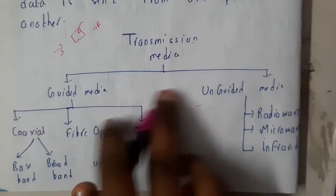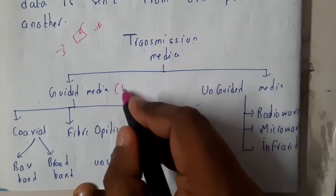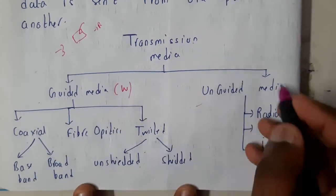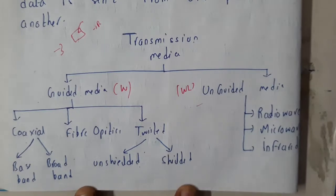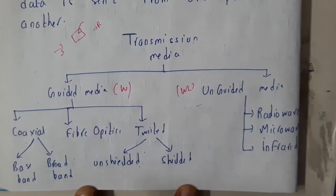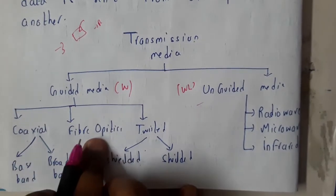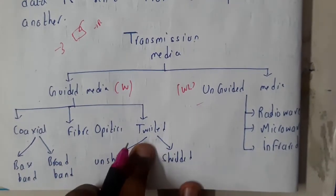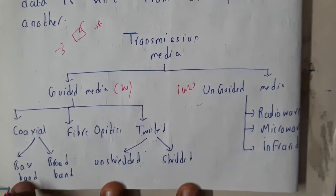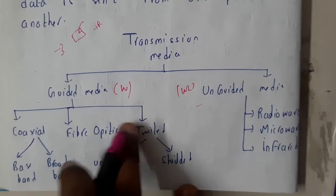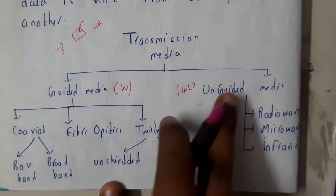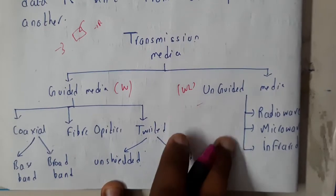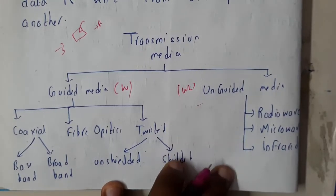Transmission media are divided into two types: guided media and unguided media. Guided means wired; unguided means wireless. In guided media we have coaxial cable, fiber optics, and twisted pair. Coaxial cable has baseband and broadband variants; twisted pair has unshielded and shielded variants. In unguided media we have radio, microwave, and infrared.